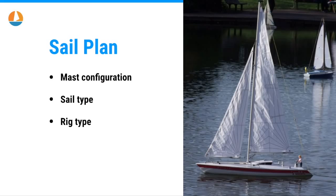So a quick recap of what a sail plan consists of. It's the mast configuration — the number of masts and where they are placed: in front, in the center, or behind the rudder, for example. The sail type — the sail shapes and their functionalities. And the rig type — the way the sails are set up on your boat. The most common sail configuration is the Bermuda sloop, which has one mast with two sails: a mainsail and a headsail.